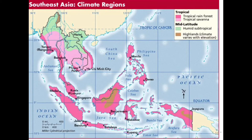The tropical rainforest climate — shown in dark pink on this map — is the most dominant climate zone. There's an average of 79 degrees Fahrenheit daily. It's hot, humid, and rainy pretty much every day. Rainfall averages between 80 to 200 inches per year, and humidity hovers between 80 and 90 percent. This climate zone supports a diverse ecosystem — Malaysia alone supports over 15,000 species of flowering plants.